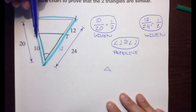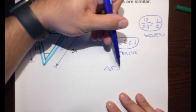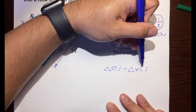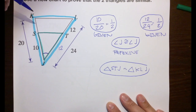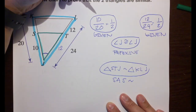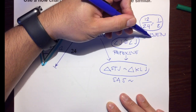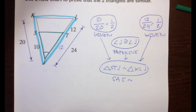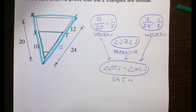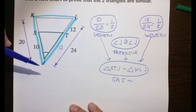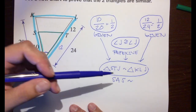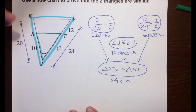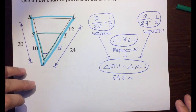Now we have our side-angle-side. So triangle STJ is similar to triangle KLJ. The reason is side-angle-side similarity. Don't forget the arrows — these three bubbles flow into our final conclusion that the two triangles are similar. You could change the order, just make sure corresponding vertices match.